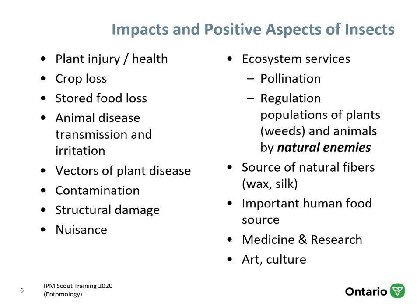Insects have both positive and negative aspects. From the standpoint of crop production, feeding on plants causes damage or death, affects plant health, and can affect the portion of the crop being harvested, resulting in crop loss for growers. Insects can also cause loss of food in storage, transmit diseases to animals including humans, vector plant diseases, cause contamination of the crop at harvest, cause structural damage, and be a general nuisance.